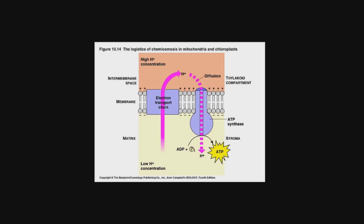There are very high concentrations of hydrogen ions inside of the thylakoid and very low concentrations of hydrogen ions outside in the stroma. So hydrogen ions naturally diffuse back into the stroma, and this is accomplished again through ATP synthase. ATP synthase phosphorylates ADP and generates ATP. And so that is how chemiosmosis works in the chloroplast and mitochondria.